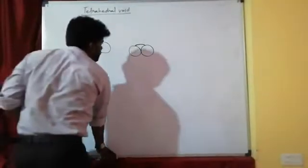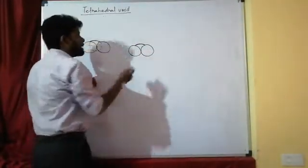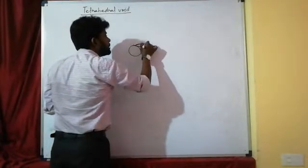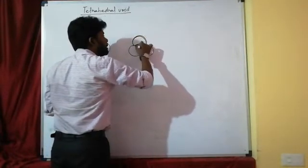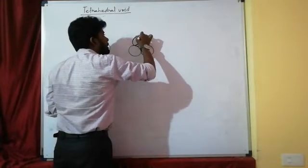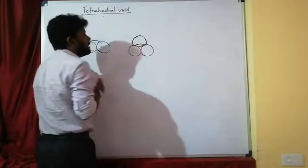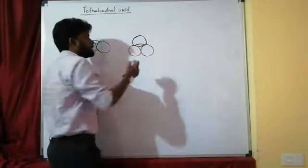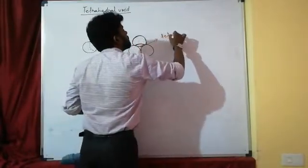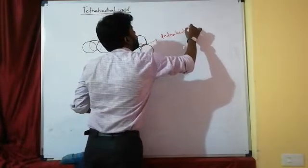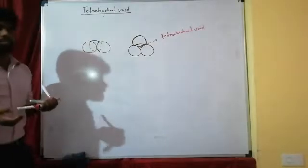Here are 3 atoms, and 1 atom is placed above these atoms. These 3 atoms plus 1 atom above — the space in between is empty. This empty space is the tetrahedral void.